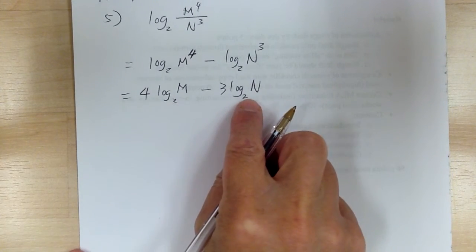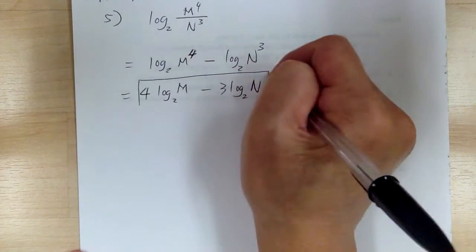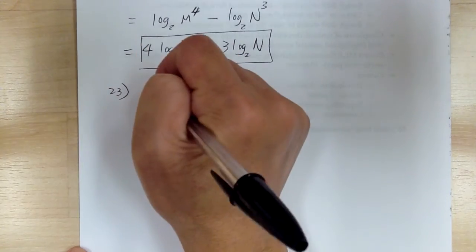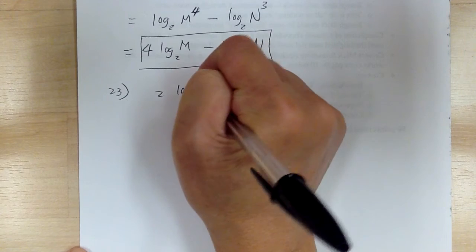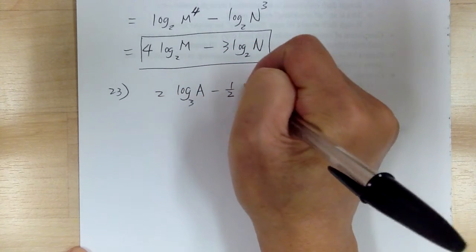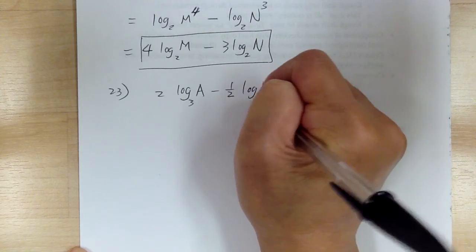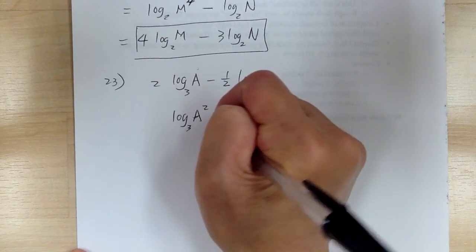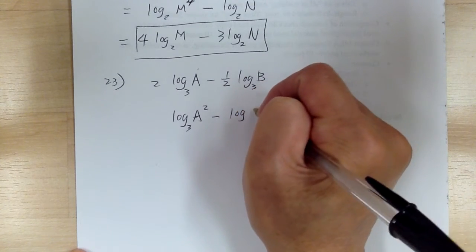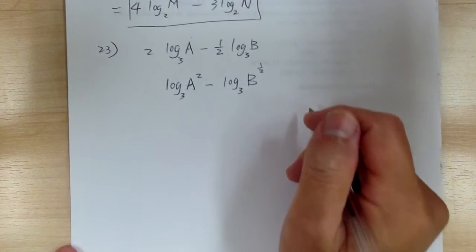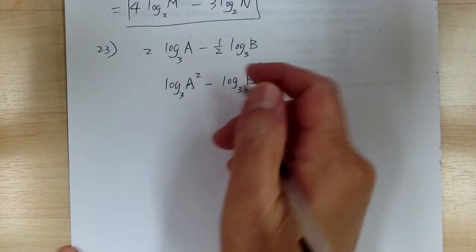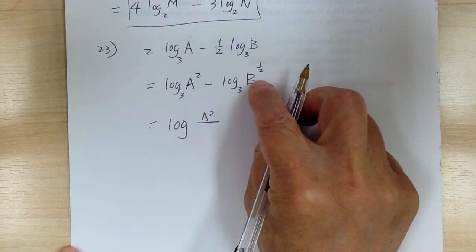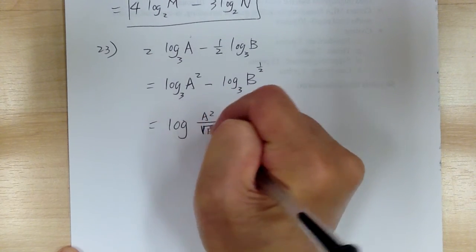Notice the way you write the base — it should be small and as a subscript. Let's go to number 23, which is the opposite direction. You have 2 log base 3 of a minus 1 half log base 3 of b. Bring the exponents in: log base 3 of a squared, minus log base 3 of b to the 1 half. When you have subtraction of logs, it becomes division. So this equals log base 3 of a squared over the square root of b.